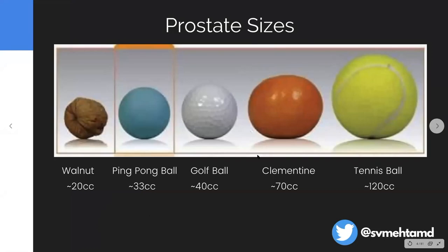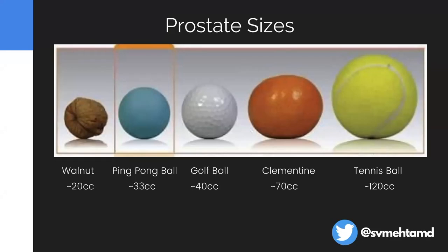I find it helpful to compare prostate sizes visually. A walnut is about 20 cc's — that's a normal prostate size. A ping pong ball is about 33 cc's, still in the normal range but a little high. 40 cc's is when you're starting to get into the BPH range, and a lot of patients we see are 40 cc's all the way up to 200 cc's. When a patient says they have a 100 gram prostate, you can tell them: you're not a walnut, you're a tennis ball — and that really hits home.